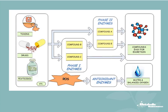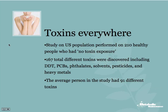If you don't think your patients have toxins, take a look at this study, I believe performed in association with the EPA. They looked at 210 people who were, quote, healthy — no disease, no known toxic exposure. They biopsied their fat, where most toxins reside, and found 167 different toxins including DDTs, PCBs, phthalates, solvents, pesticides, and heavy metals. The average in the study was 91 different toxins in each person. So every person on average who seems healthy has 91 different toxins in their body.